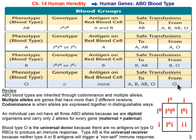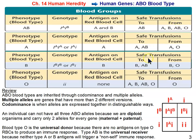Type O blood is considered the universal donor. The flip side is type AB blood, which is the universal receiver — if you have type AB blood, you can receive blood from any other blood type: type A, type B, type O, and of course type AB.